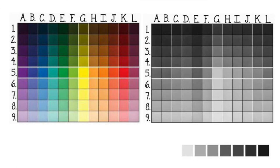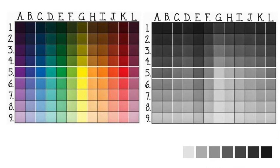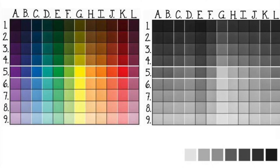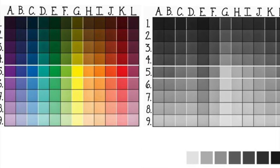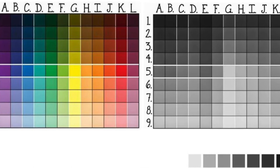You also need to prepare a color value chart like the one showing in the video. With this chart, you can see the correlation between the different colors in terms of value. For example, dark purple, dark green, and dark blue are the darkest colors. Light blue, yellow, and orange are some really light colors that you can use to represent lighter tones in the picture.